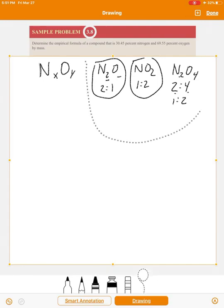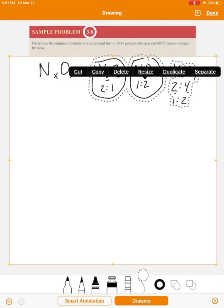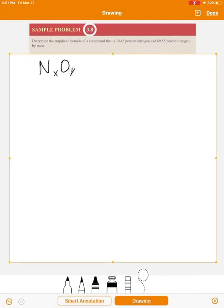So let's take a look here. We're trying to find the empirical formula given this problem. Percentages are commonly given as the amounts of each element in these types of problems. So we have 30.45% nitrogen and 69.55% oxygen, this is perhaps the thing to try.